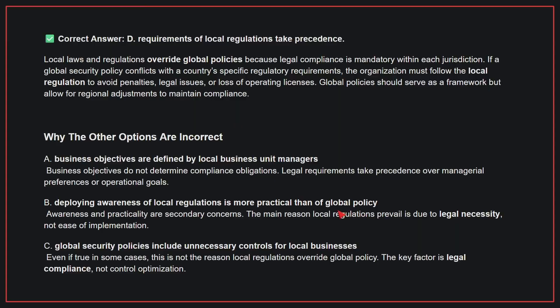Local laws and regulations override global policies because legal compliance is mandatory within each jurisdiction. If a global security policy conflicts with a country's specific regulatory requirements, the organization must follow the local regulation to avoid penalties, legal issues, or loss of operating licenses. Global policies should serve as a framework but allow for regional adjustments to maintain compliance.